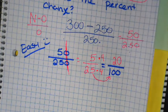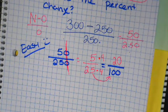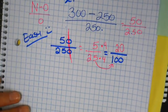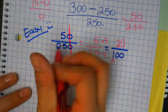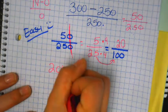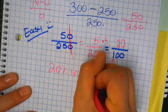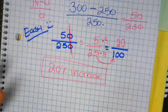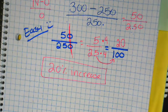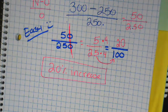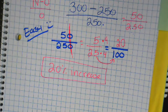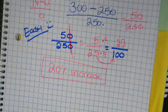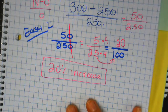So what percent is it? 20%. Now, did my price go up or down? Up. So it would be 20% increase. 20% increase. Are we okay?